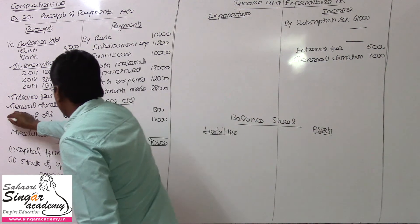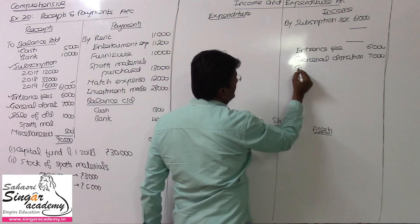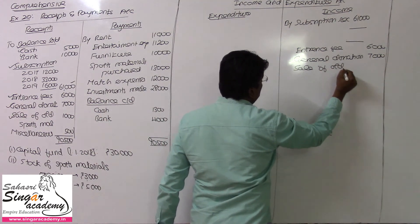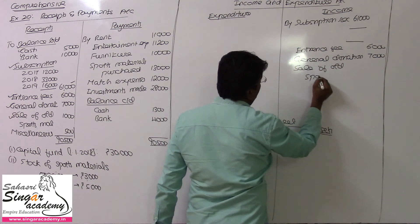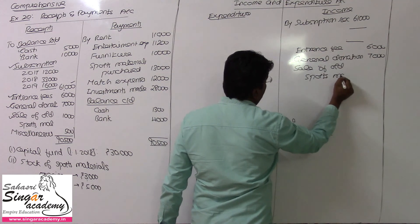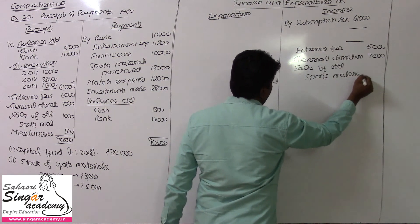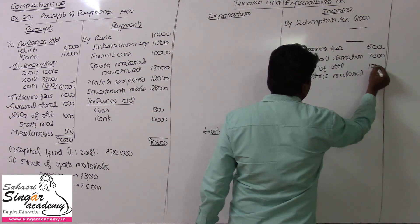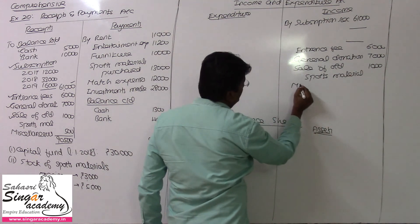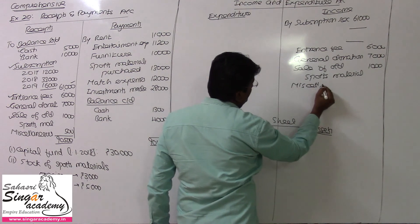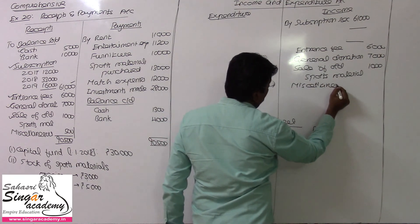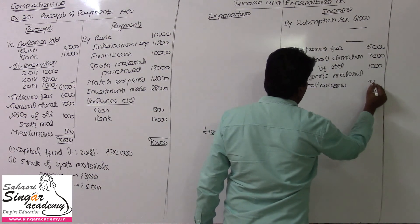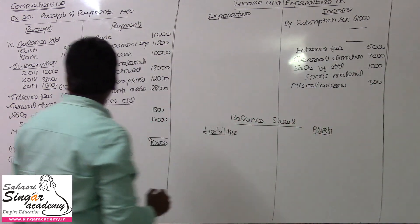Sale of old sports material will also come here on the income side. Sale of old sports materials, value being 11,000. Miscellaneous receipts — value is 500 rupees. So, 500 rupees. We have now posted all the receipts.